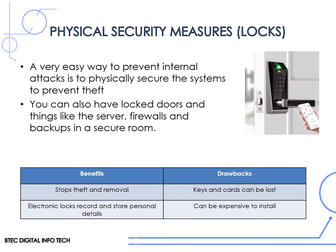When we think about physical security measures, we can think of locks as a very good example. An extremely easy way to prevent internal attacks is to physically secure systems to prevent theft. This could mean actually physically locking the machines to the desk. You can also have locked doors, with things like the server, firewalls and backups locked in a secure room.